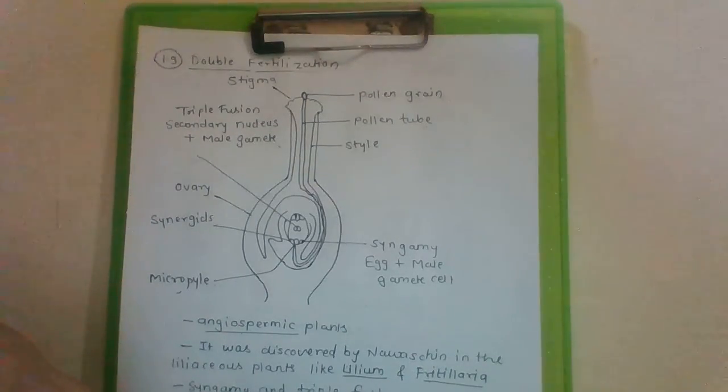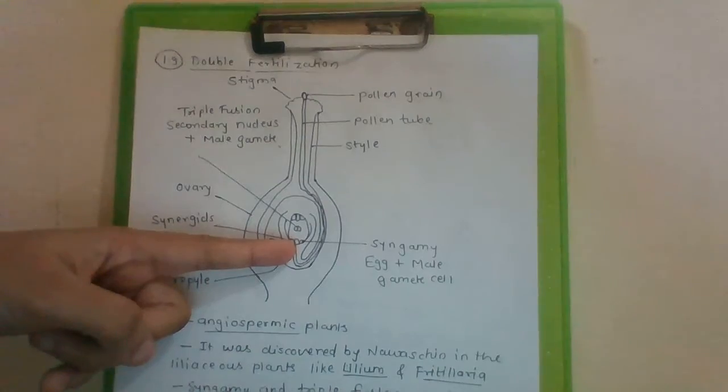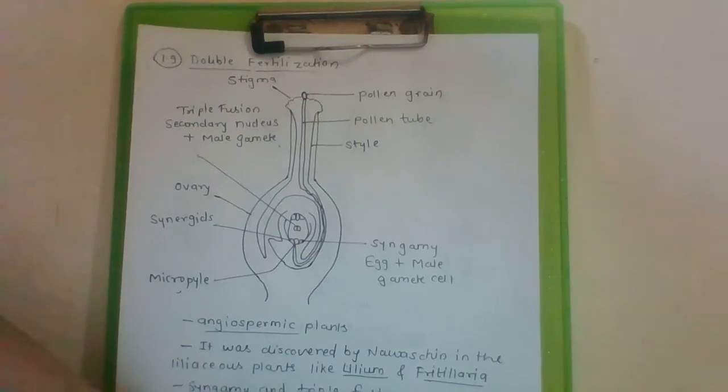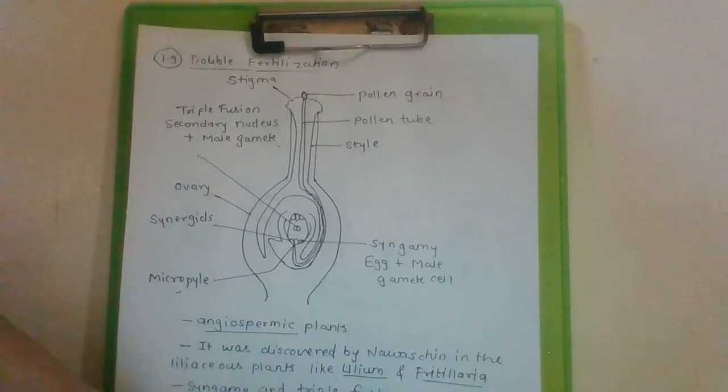It usually enters ovule through, what is the name of this end? It is micropyle, it is termed as porogamy.